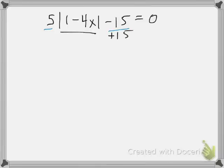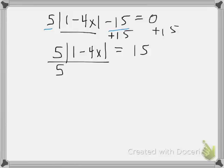Well that means the first thing I need to do is to add 15 to both sides. So I keep my 5 times the absolute value expression and I add 15 to both sides. Now I need to move this 5. How am I going to move that 5? I'm going to divide both sides by 5.